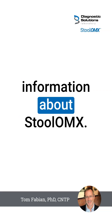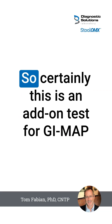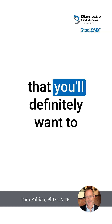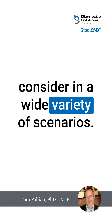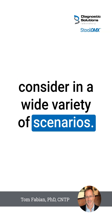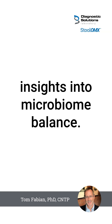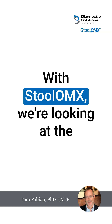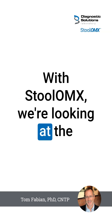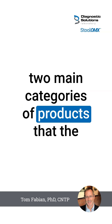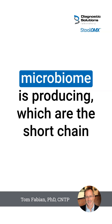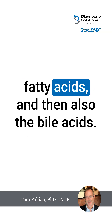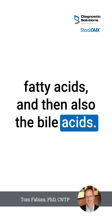Just a little bit of background information about Stualomics. This is an add-on test for GI Map that you will definitely want to consider in a wide variety of scenarios, because it gives you further insights into microbiome balance. With Stualomics, we're looking at the two main categories of products that the microbiome is producing, which are the short-chain fatty acids and the bile acids.